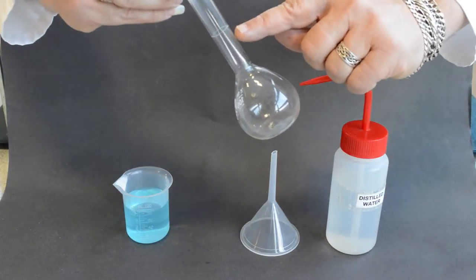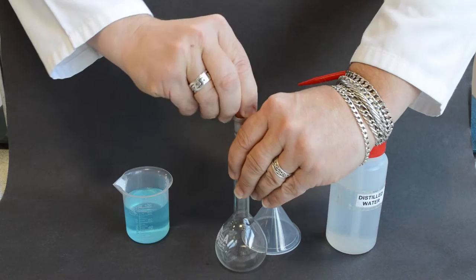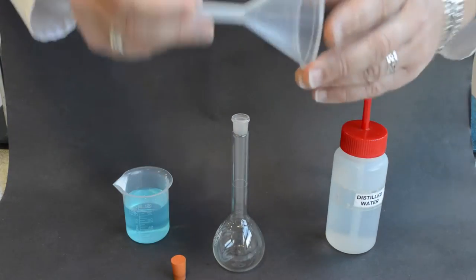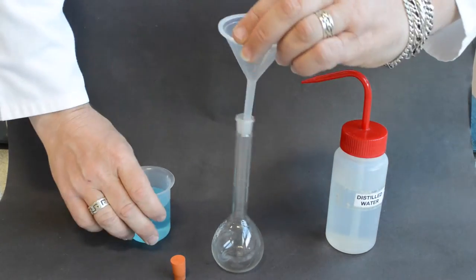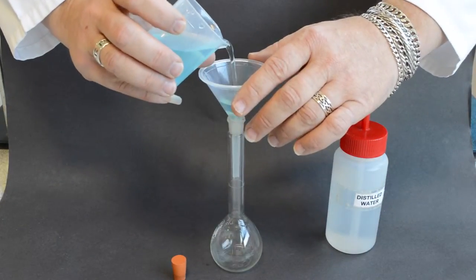Using a volumetric flask, make the sample up to precisely 100 milliliters. Use a funnel to transfer from the beaker to the volumetric flask.